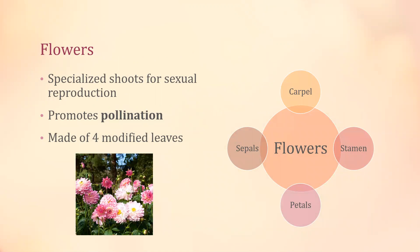Let's talk about flowers. Flowers are essentially specialized shoots for sexual reproduction. Their main purpose is to promote pollination, and a flower is actually made of four modified leaves. As you can see in this diagram, it's made of sepals, carpals, stamen, and petals, which we will go into.